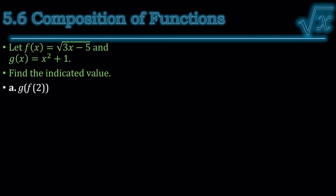Let f(x) = ∛(3x-5) and g(x) = x² + 1. Find the indicated value. We're going to start from the inside. We have f of 2. So f of 2 is when I have f and I plug in a 2. 3 times 2 is 6, minus 5 is 1, square root of 1 is 1.